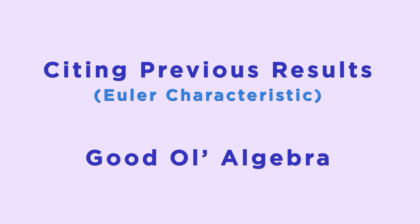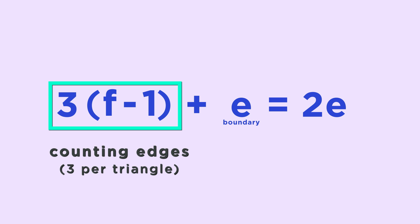The first step is to observe that 3 times f minus 1 plus the number of edges on the boundary is equal to 2e. Why? Look at the left side. 3 times f minus 1 is counting edges. Each of the f minus 1 triangles has three edges. The edges on the interior are counted twice, since they are the sides of two different triangles. But the edges on the boundary are only counted once. So when we add the number of edges on the boundary, we get twice the total number of edges.